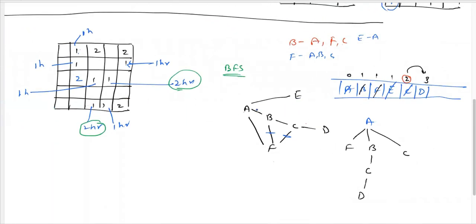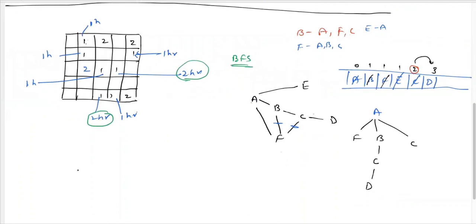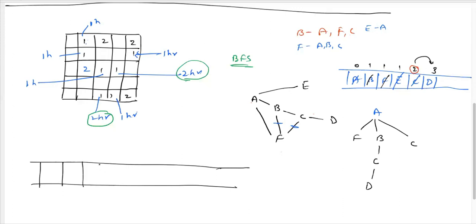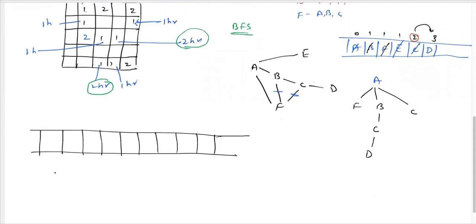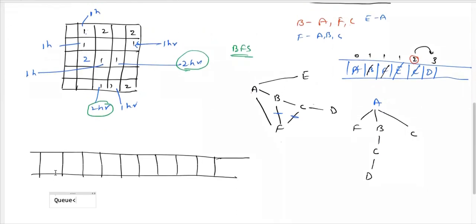We apply a similar algorithm here, except instead of one source node, all rotten oranges are source nodes. First traverse the entire matrix and wherever you find a rotten orange, insert it into the queue. A student asks about using one queue for all rotten oranges — yes, one single queue. For updating minimum distances: since all sources start at time 0 and BFS processes level by level, a fresh orange will always be first reached by the nearest rotten orange.